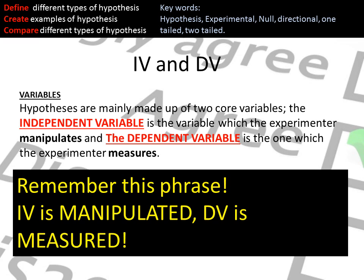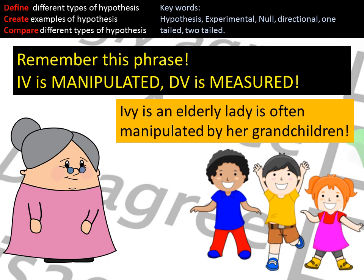The IV is the independent variable and this is always manipulated in an experiment — it's always what's going to be changed. The DV is the dependent variable and this is what's measured. You can remember this through the analogy: IV is the old woman who is manipulated, and her grandchildren are measuring what they can get from their granny.